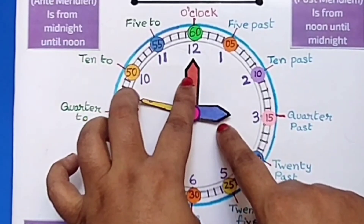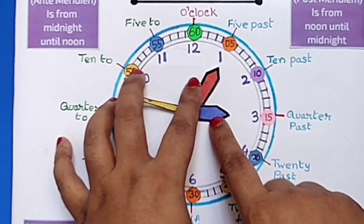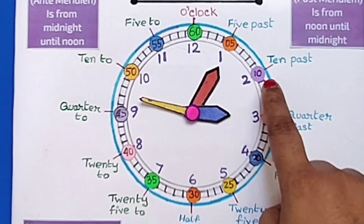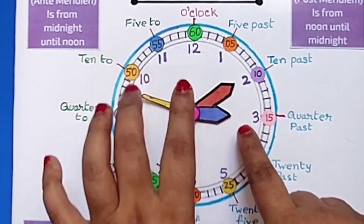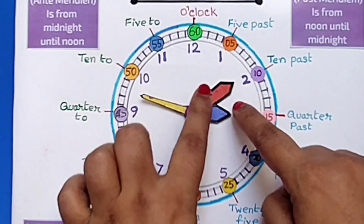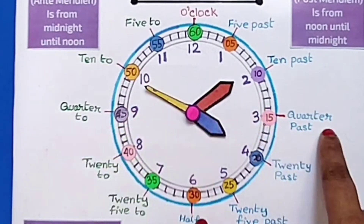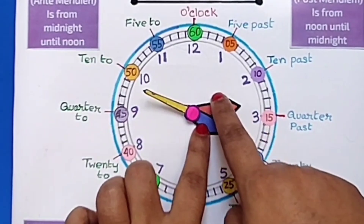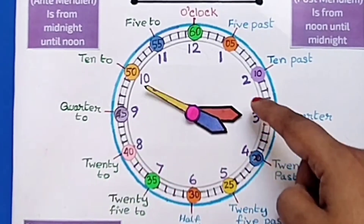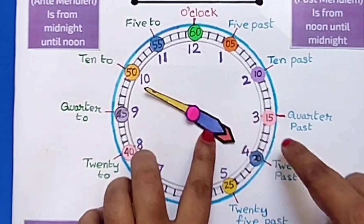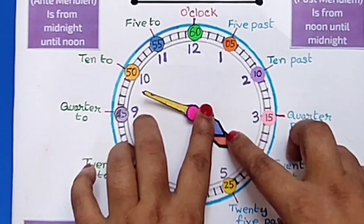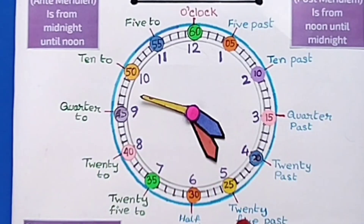Now it is 3 o'clock. When the long hand is on 1 and the short hand is on 3, it is called 5 past 3. When the minute hand is on 2 and the short hand is on 3, it is called 10 past 3. I move the short hand on 4 and the minute hand on 3 — it is called quarter past 4. When both hands are on 4, we say it is 20 past 4. It is 25 past 4.